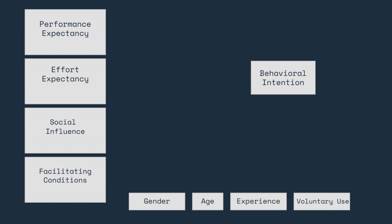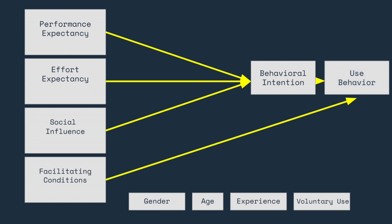Behavioral Intention, assuming there is access to the system, measures the intention to use the system. Performance expectancy, effort expectancy, and social influence directly affect behavioral intention. Facilitating conditions, in turn, affects use behavior.